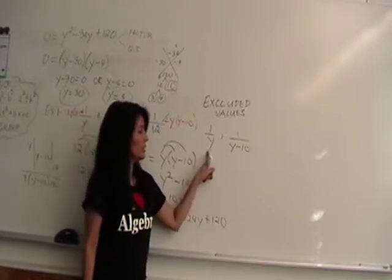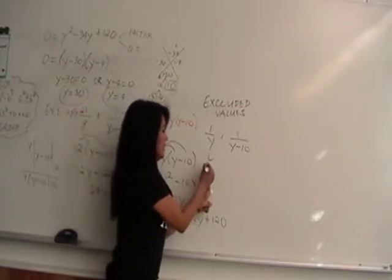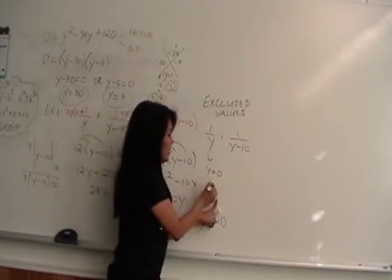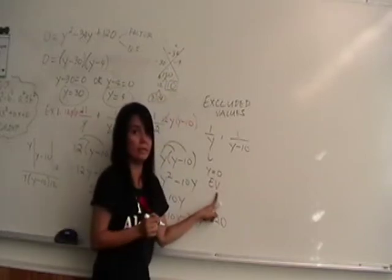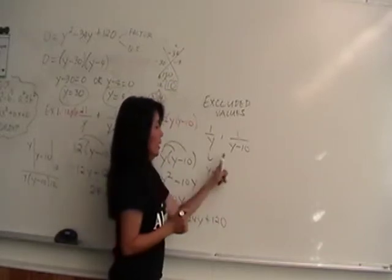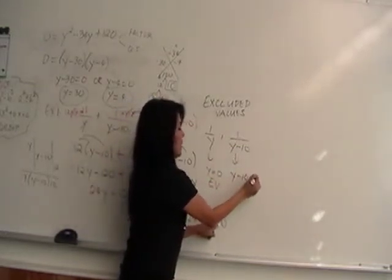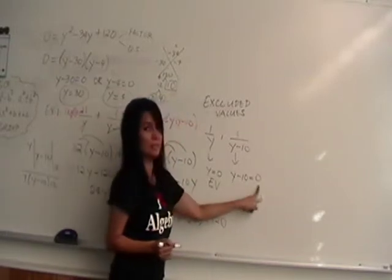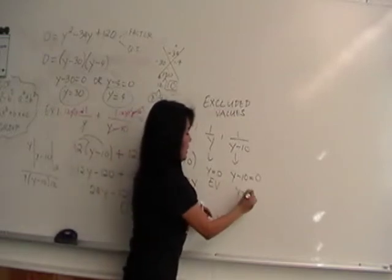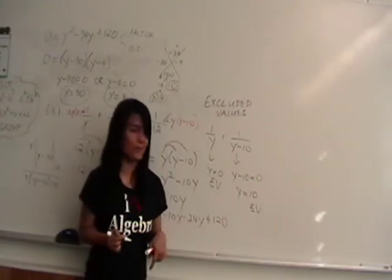What values of y make the denominator zero? From 1/y: we don't want y to be zero, so y equals 0 is an excluded value (EV). From 1/(y minus 10): we solve y minus 10 equals 0, giving y equals 10 as another excluded value. So we have two EVs: 0 and 10.